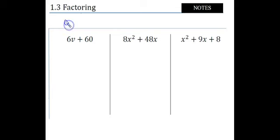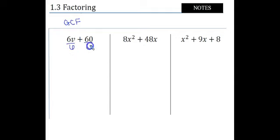Speaking of factoring, the most common type of factoring is what's called GCF factoring, or greatest common factor, and this is when we try to find a common factor — a common number that both items share. Sometimes you'll have three items, but if we think about 6 and 60, those integers, a factor that both of those share is 6, because 6 can go into 6, but it can also go into 60. It also happens to be the greatest common factor, so we want to try to find the largest number. 2 would also fit — 2 also can go into 6 and 60 — but 6 is the greatest. Some people refer to this also as undistributing, because instead of multiplying or distributing something in, this time we're going to divide something out.